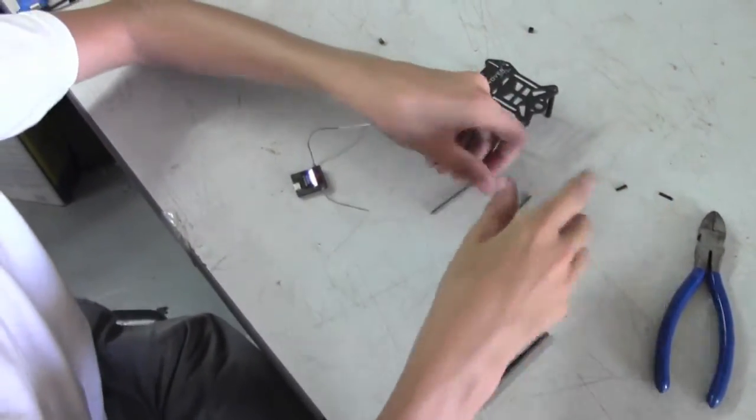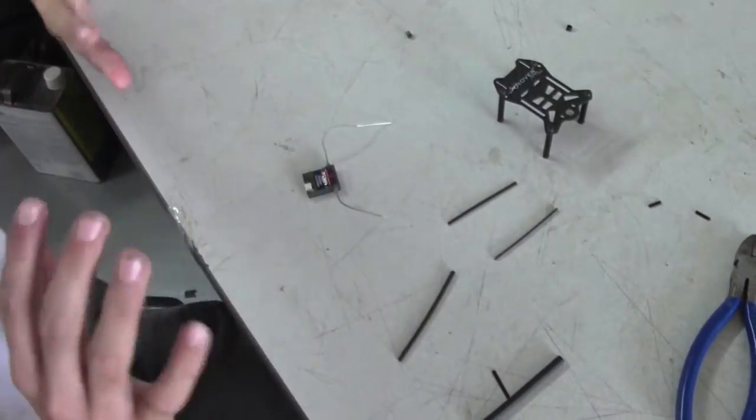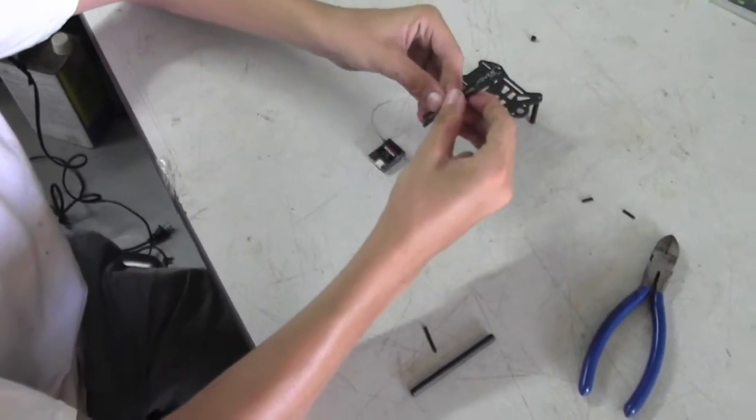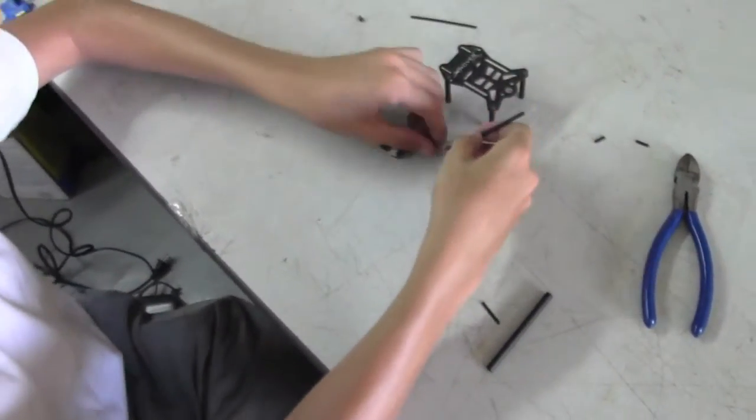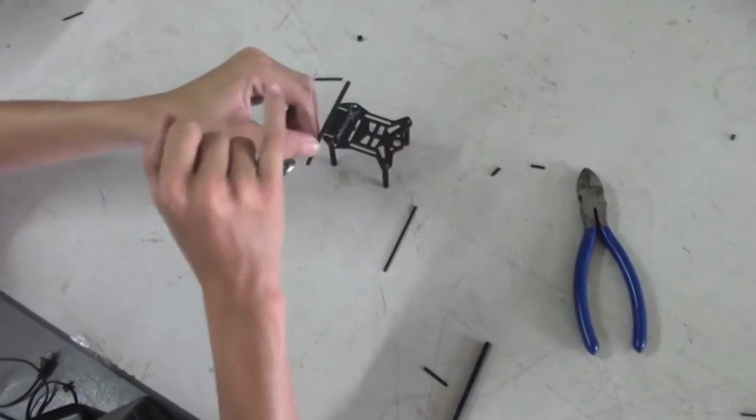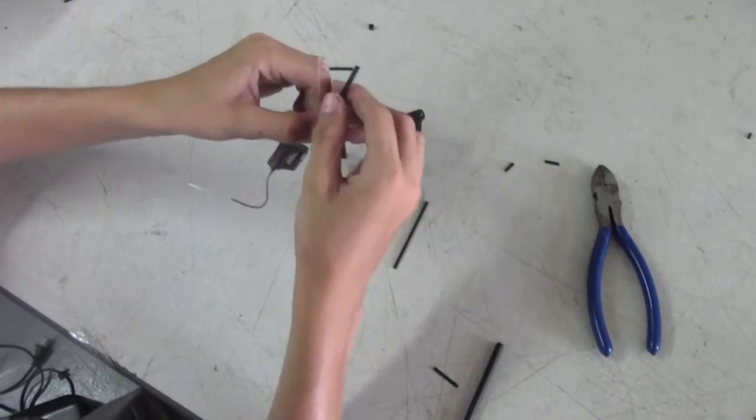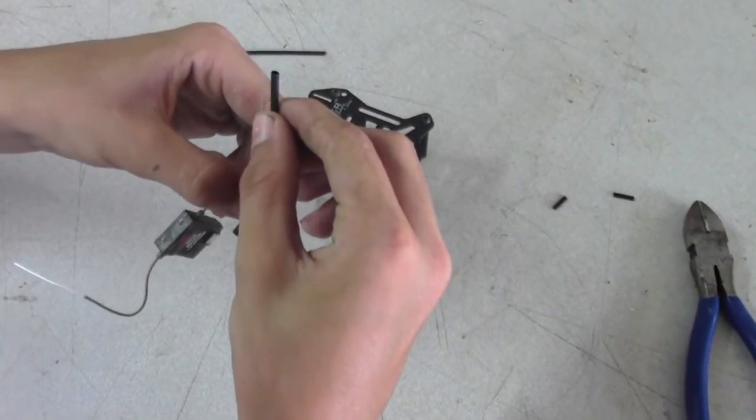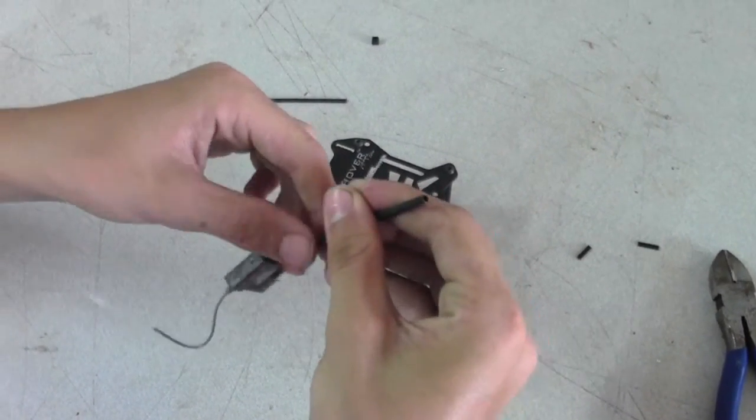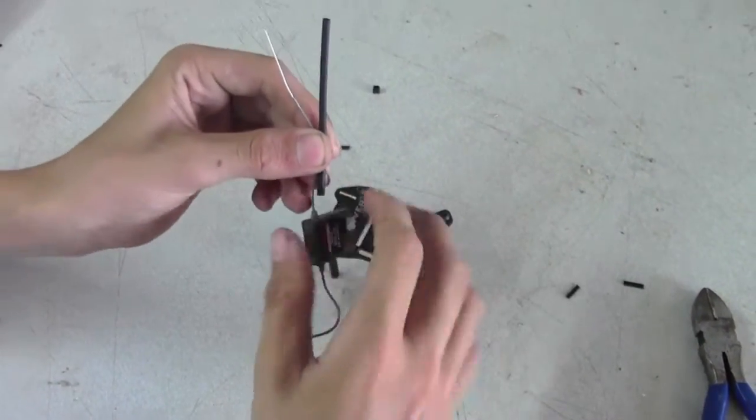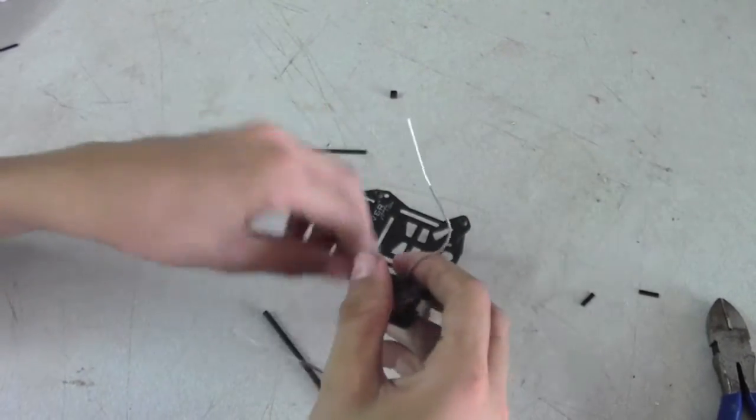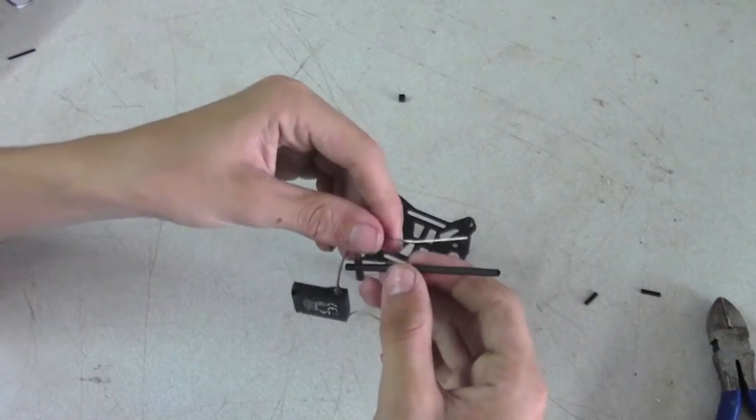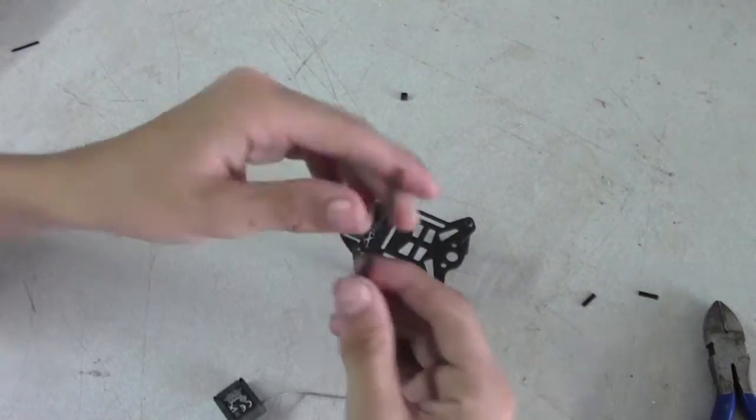Now we're going to be taking the heat shrink, and we're actually going to start heat shrinking this. For this step, you're going to need a heat gun. What we're going to do now is we're going to measure out how much heat shrink that we need. Generally, I take the heat shrink, and I usually just make it to where the heat shrink goes just past the end point of the receiver antenna, and that kind of gives it an extra layer of protection.